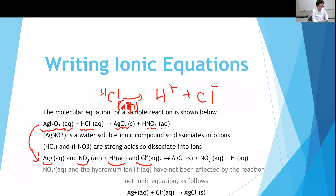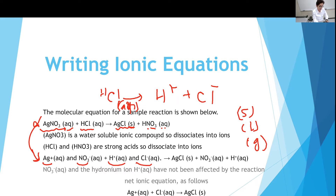When going from a molecular equation to a complete ionic equation, we break down only Aq compounds. Any compound designated as solid, liquid, or gas cannot be separated into its ions — it remains in molecular form. So AgCl solid stays as AgCl, but nitric acid, because it is Aq, dissociates to hydrogen ion and nitrate ion. This gives us the complete ionic equation.